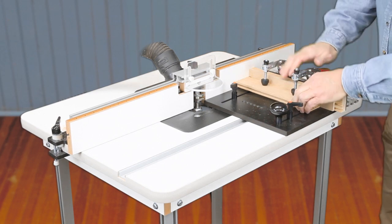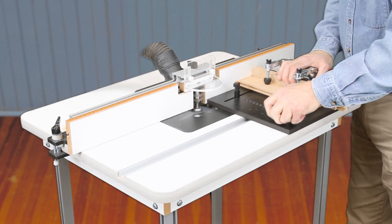If you make the cope cuts first, you'll need a 3/4 inch thick backer as long as your longest rail.